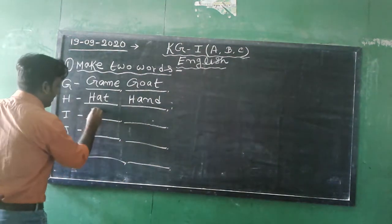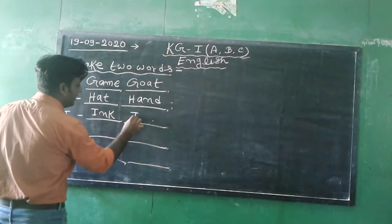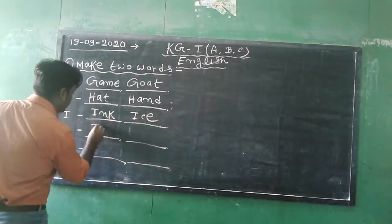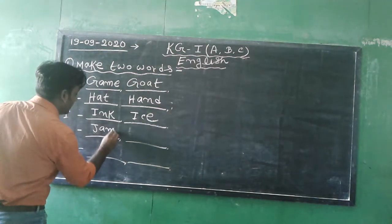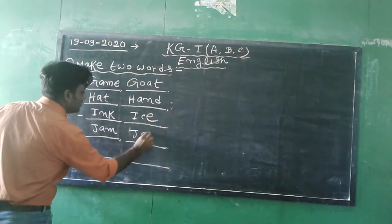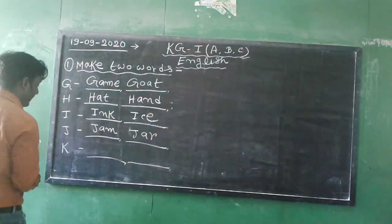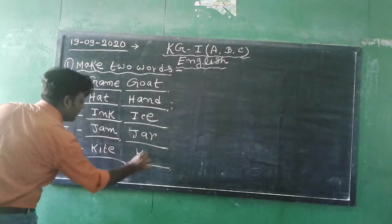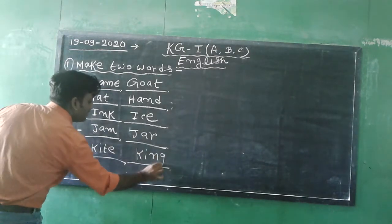Next, I for in, I-N in, and ice, I-C-E ice. J for jam and jar. K for kite and king.